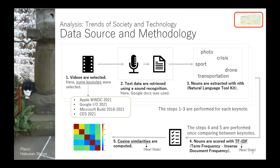At the third step, nouns were extracted with Natural Language Toolkit for English sentences in Python programming. Natural Language Toolkit is called NLTK for short. When you extract words, a lemmatizer is better than a stemmer for making words original. Steps 1, 2, and 3 are performed for each keynote. Then, Steps 4 and 5 are performed once, comparing between keynotes.